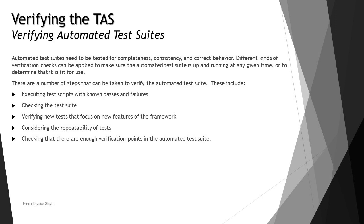In regression test suites and similar suites, there are a number of steps that can be taken to verify the automated test suite. These include: executing test scripts with known pass and fail results, checking the test suite, verifying new tests that focus on new features of the framework, considering the repeatability of the test, and checking that there are enough verification points in the automated test suites. We will be talking in more detail about each of these points.